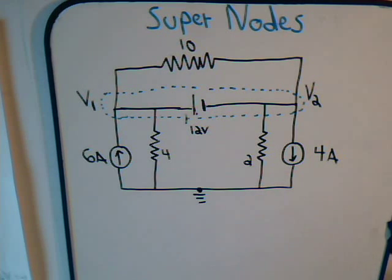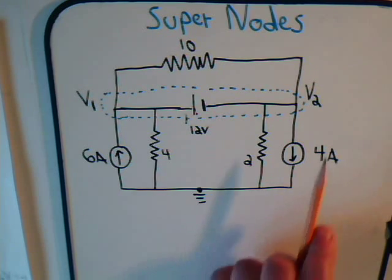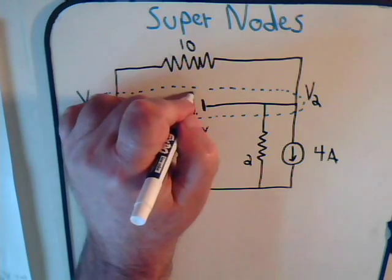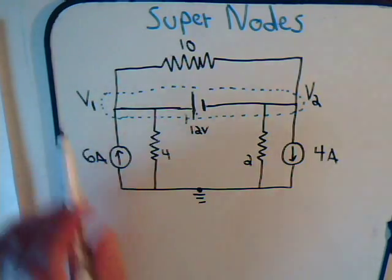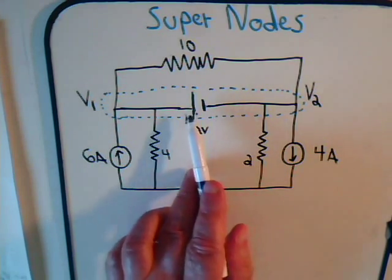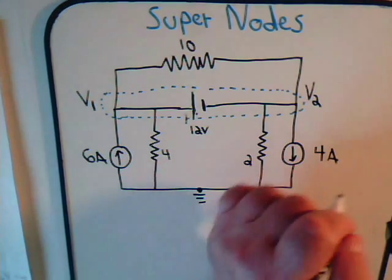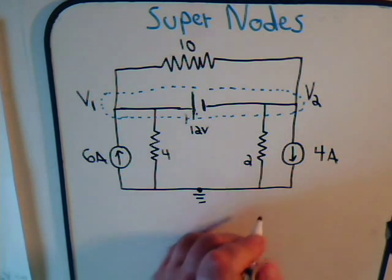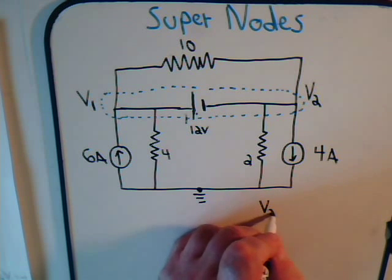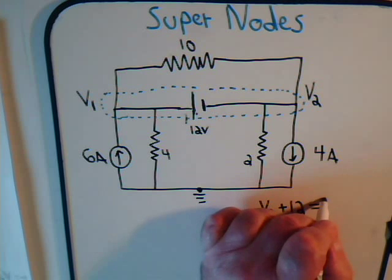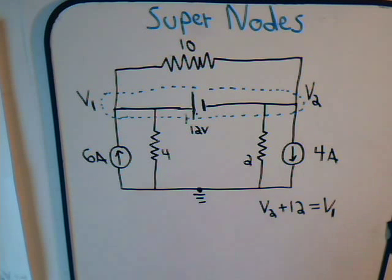Looking at our setup, we realize that here is voltage V2, and then to get to voltage V1 we have to add 12 volts. So we know that V2 plus 12 equals V1. We have that relationship.